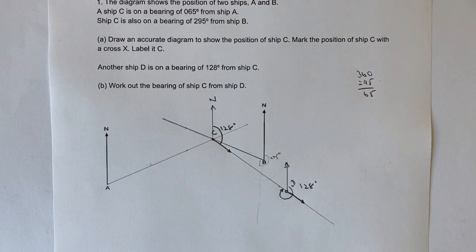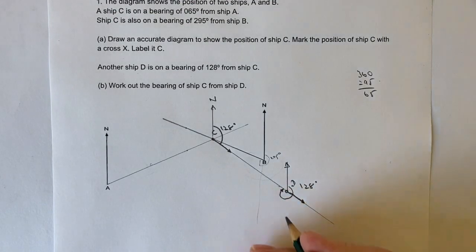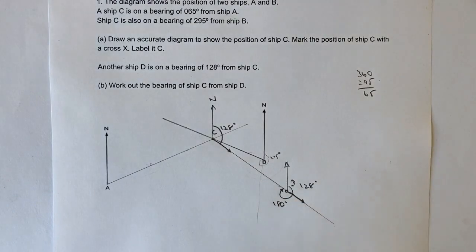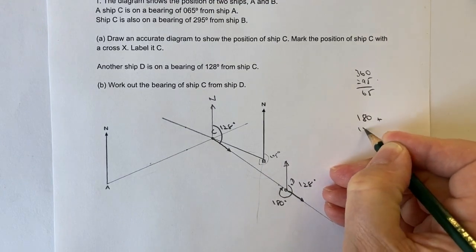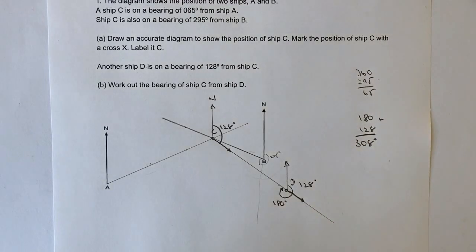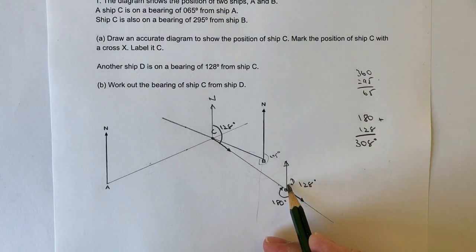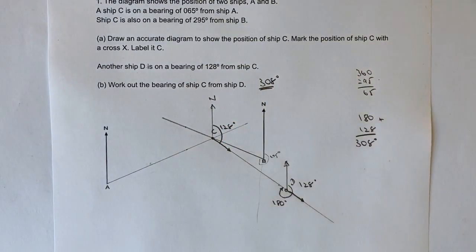Which means that because a straight line, in other words, from this point around to this point is 180 degrees, if I add 180 degrees to 128 degrees, I can figure out the bearing of ship C. So 180 degrees plus 128 degrees, well, that's going to be 308 degrees. So the answer to part B of the question is going to be from the north all the way around clockwise is going to be 308 degrees. And that would be the answer to the second question.